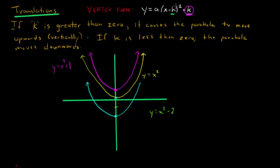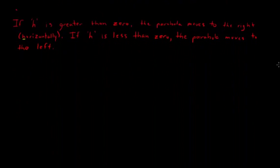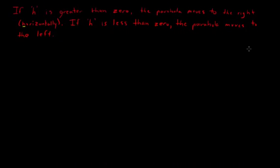Secondly, we have h, and h is what is going to move things horizontally. h is for horizontal, that's how you can kind of remember the difference between the two. So if h is greater than zero, in other words, if it's a positive number, the parabola moves to the right horizontally. If h is less than zero, the parabola moves to the left.